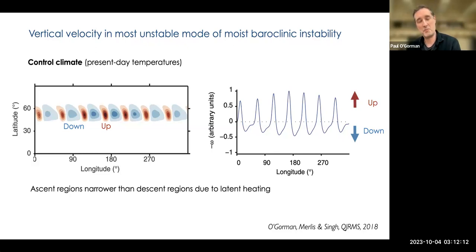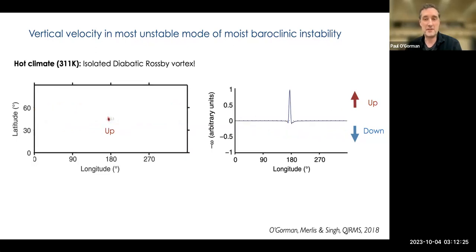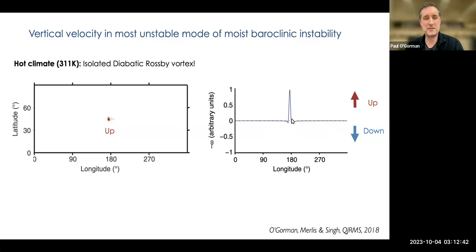If we keep warming it up, at first we just see the narrower ascent region getting narrower to some extent, and there isn't much change for a while. But eventually if you get to a hot climate — and even before that — you see a dramatic change: the fastest growing mode switches to a vortex mode. You can see it in the middle of the panel — strong ascent surrounded by descent — and it's a bit easier to see in the cross-section where you see the spike. When we first saw this, we weren't quite sure what it was, maybe wave number one or something, but really it's actually just an isolated vortex.